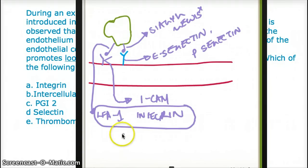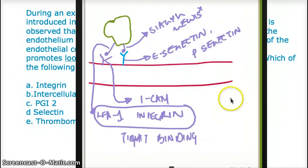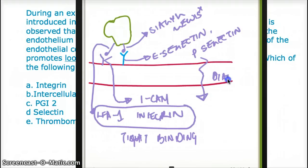That's because they have a defective LFA-1-integrin on the receptor sticking out from the white blood cell — that's tight binding. Now, what about other activities? For example, diapedesis — moving through the vessel wall.